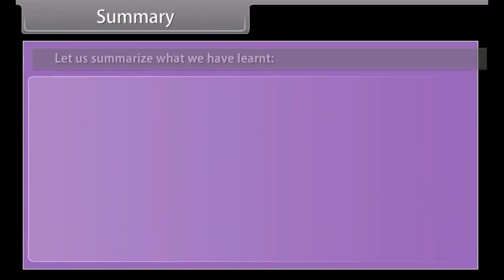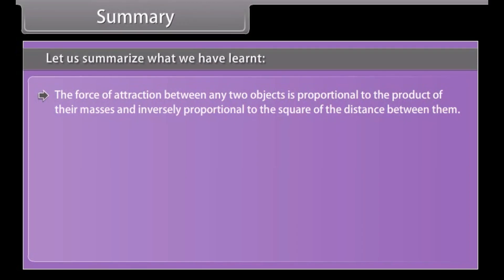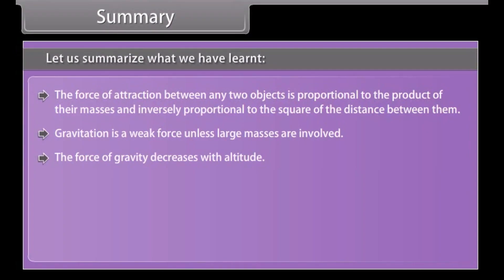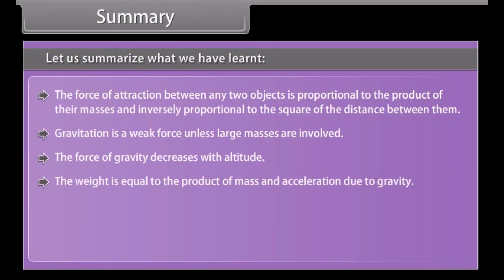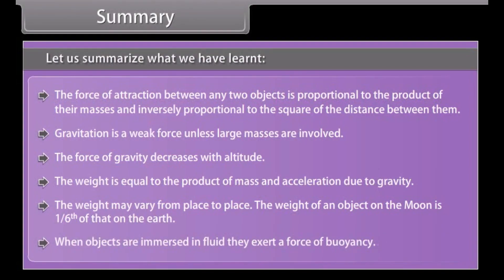Summary. The force of attraction between any two objects is proportional to the product of their masses and inversely proportional to the square of the distance between them. Gravitation is a weak force unless large masses are involved. The force of gravity decreases with altitude. Weight equals the product of mass and acceleration due to gravity, and may vary from place to place. The weight of an object on the moon is one-sixth of that on earth. When objects are immersed in a fluid, they experience a force of buoyancy.